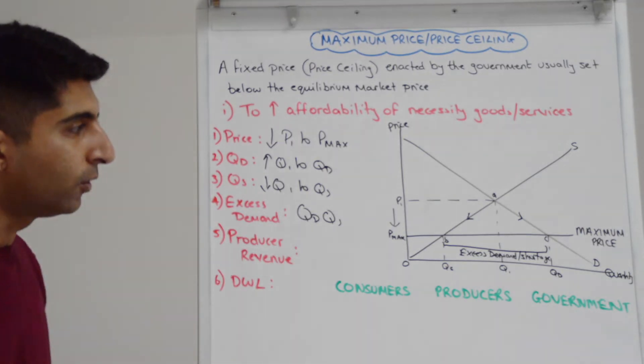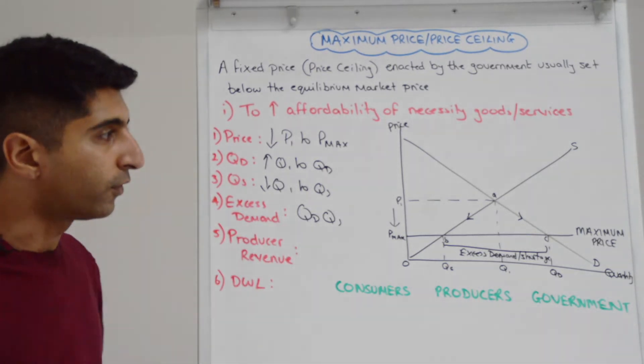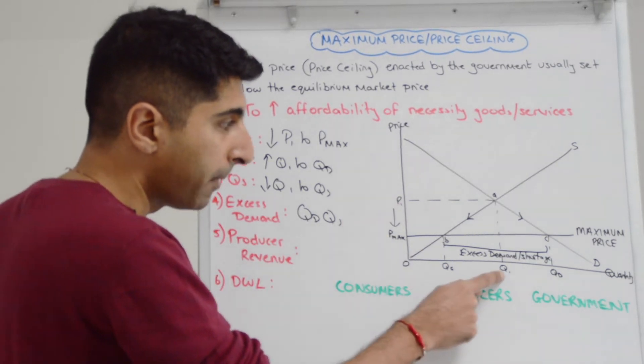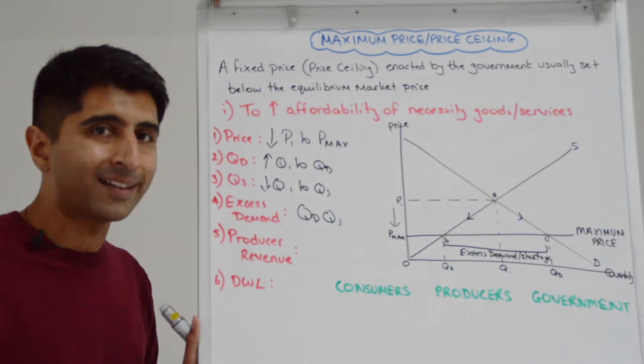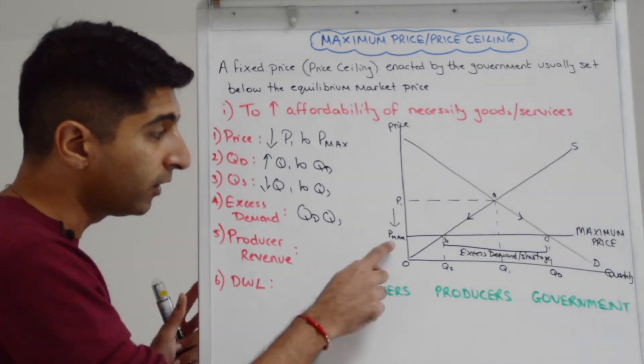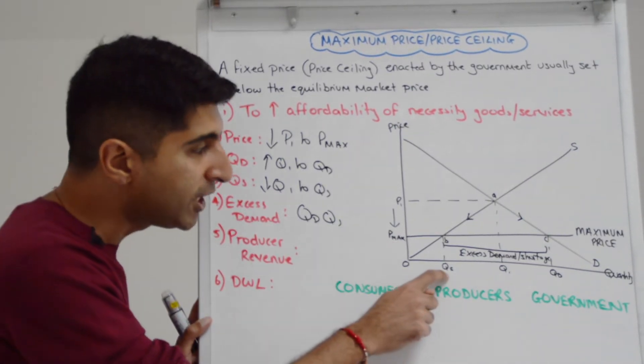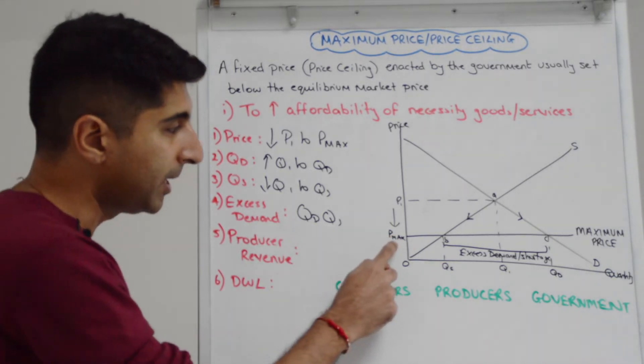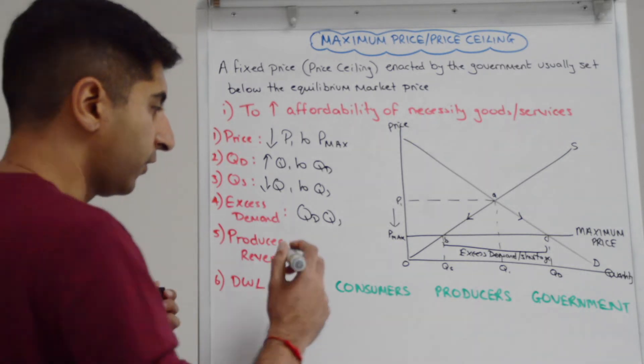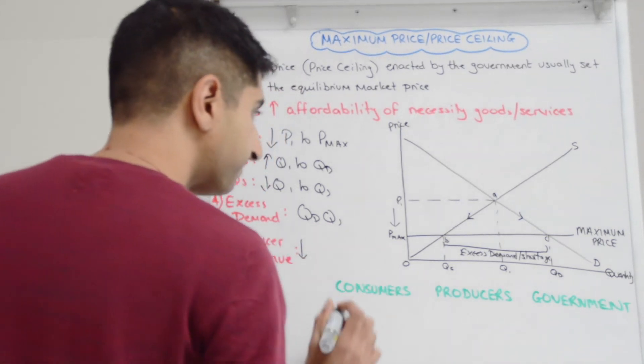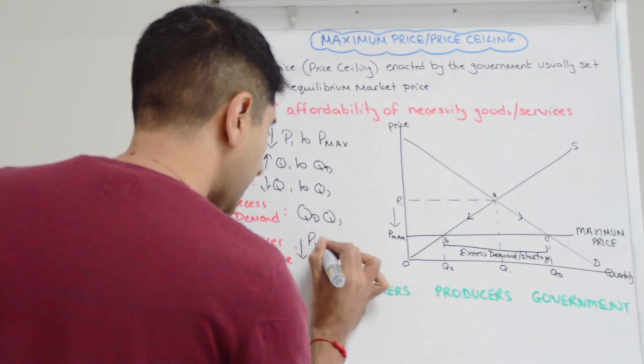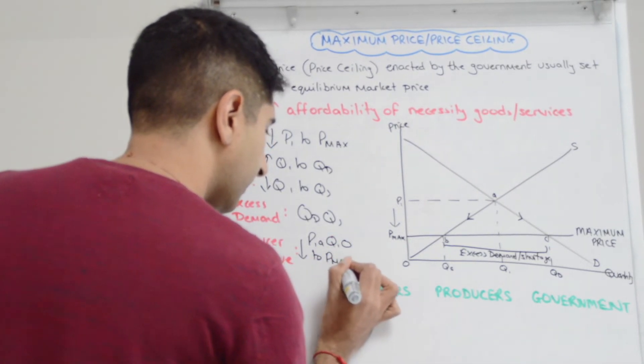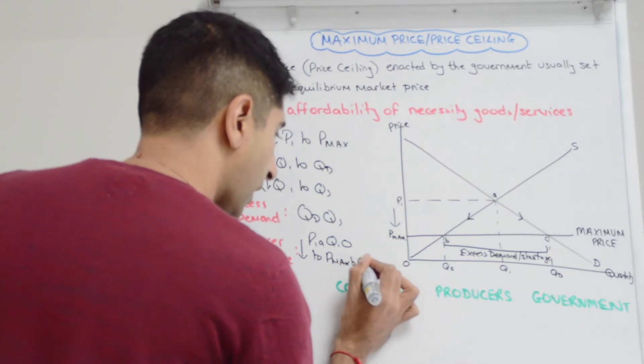What about the producer revenue? Well, remember, revenue is P times Q. So let's go before the maximum price. We can see producer revenue is P1 multiplied by Q1, P1A, Q10 as an area. What is it now? Well, at a lower price, supplies only QS. That's what suppliers are selling. So Pmax times QS is a much smaller area, Pmax B QS zero. So we can see it's fallen dramatically from P1A, Q10 to now only Pmax B QS zero.